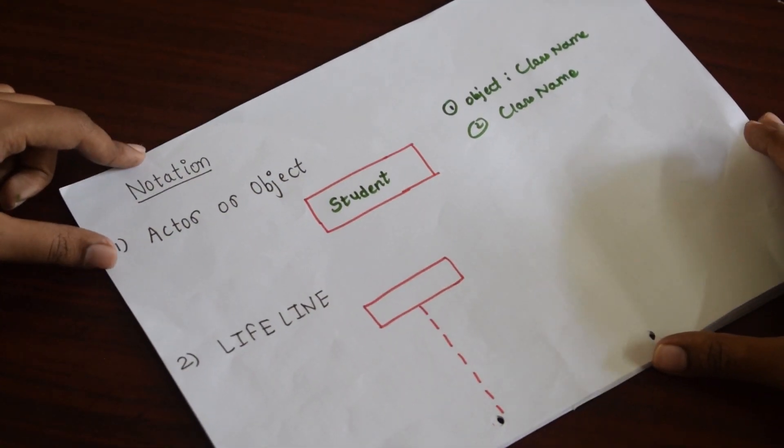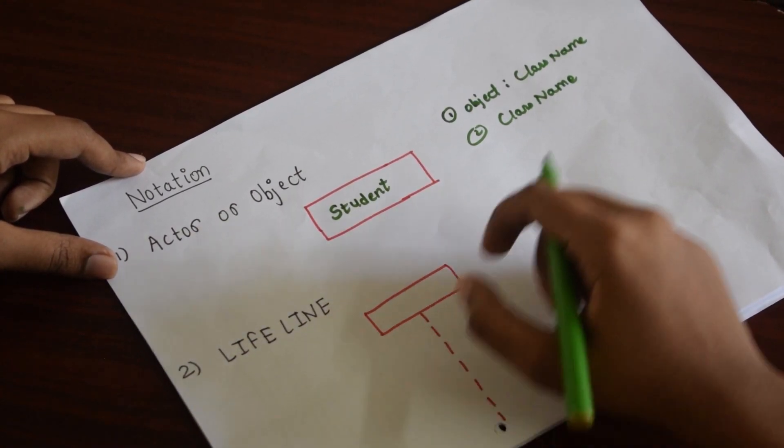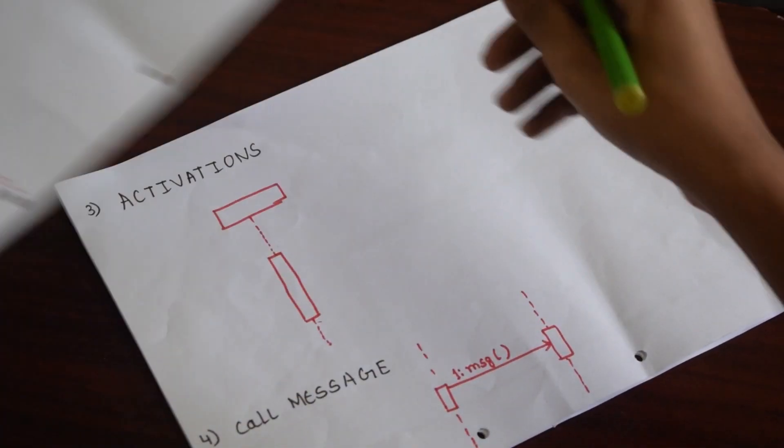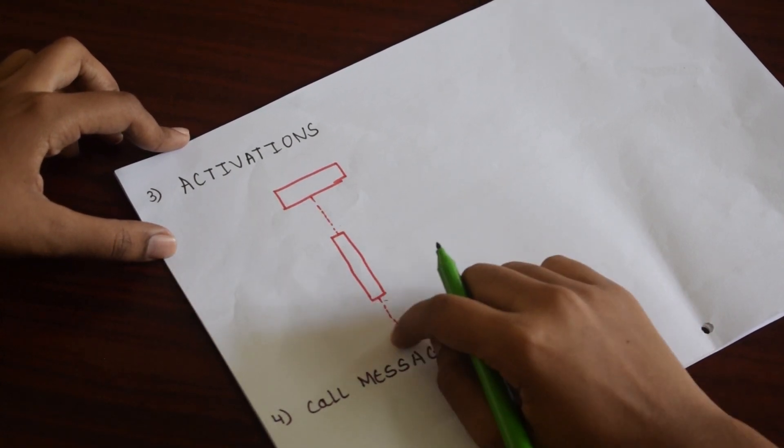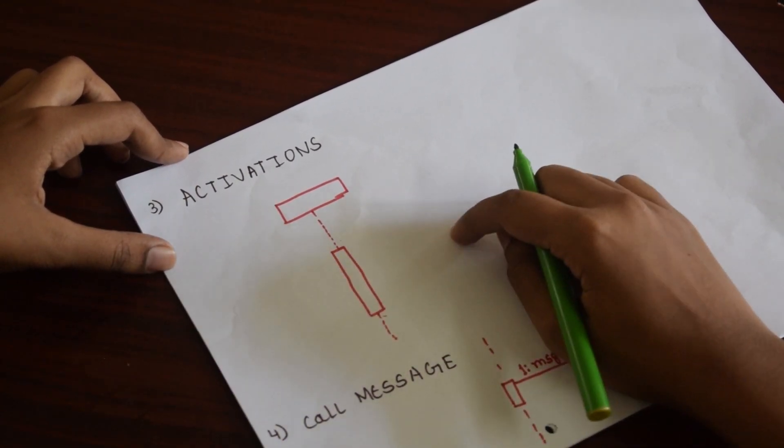Next notation is lifeline. A dotted line extends from the object throughout its life. This completes the lifespan of the object. Next notation is activation. A rectangle on a lifeline shows that particular object is performing an operation or is active.